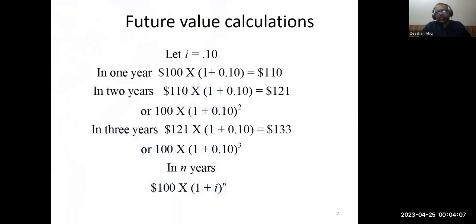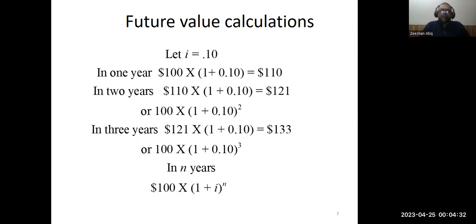Looking at the concept of future value of money — we study this to understand present value. The present value calculation is the opposite of the future value calculation. Whatever money you invest today multiplies over time. For example, if the interest rate is 10%, $100 invested will be equal to $110 after one year, $121 two years from now, $133 three years from now, and so on — $100 multiplied by (1 + i)^N in the future.